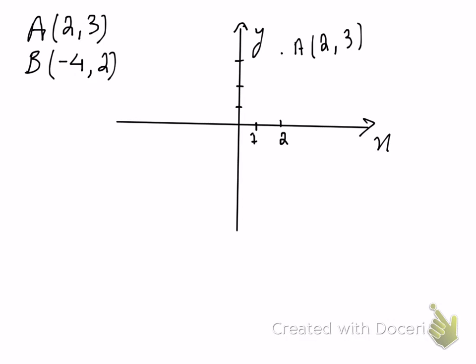Now let's locate B. B has coordinates. So minus 4 means I'll have to move four units towards the left — so here is minus 1, minus 2, minus 3, and finally minus 4. Now y is positive 2, so that means positive 1 is right here and positive 2 should be right over there. So minus 4 comma 2 will lie somewhere here. So here is point B with coordinates.